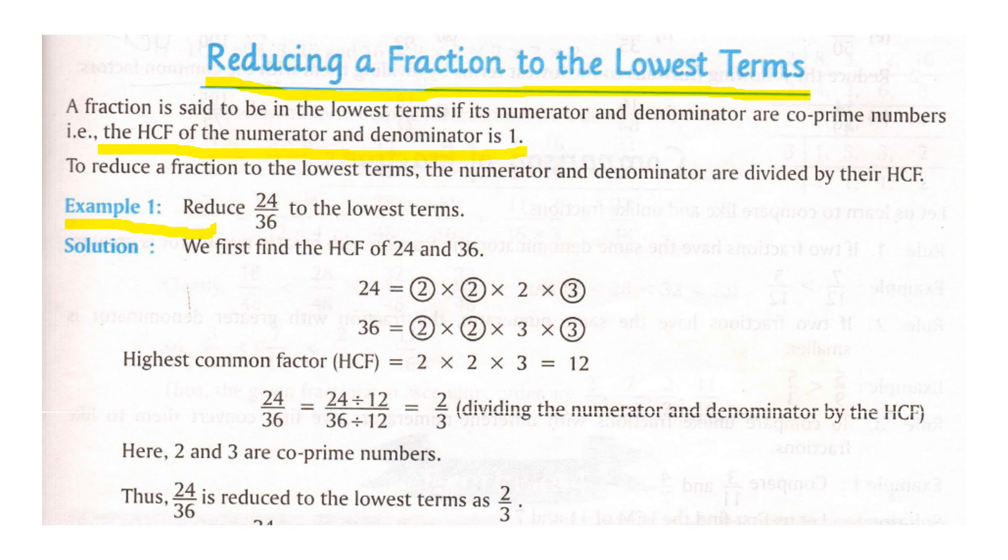Example 1 says reduce 24 by 36 to the lowest terms. So what we will do? We first find the HCF of 24 and 36.